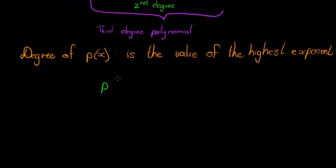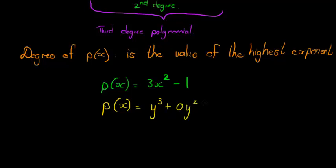But it doesn't have to have all the terms. Let me show you an example. I can have a polynomial p(x) = 3x² - 1. This is a polynomial of degree 2, because its highest exponent for x is 2. It only has two terms, but the number of terms has nothing to do with the degree. I can have p(x) = y³. This is a polynomial of degree 3. The only thing is that the coefficient of the other terms are all 0. It's got no y² terms, no y terms, and no constant terms. We just don't need to write those.